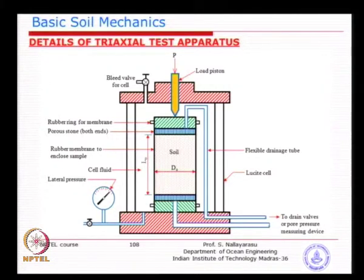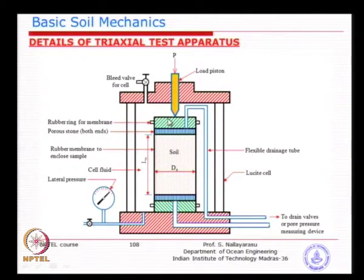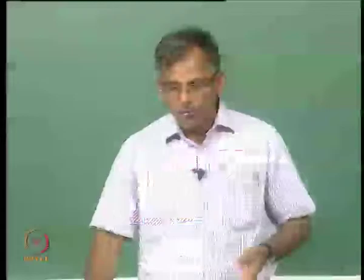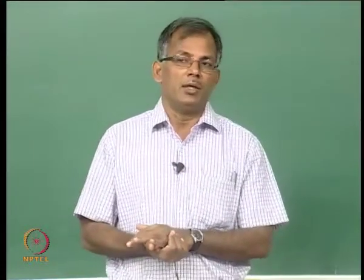The next test is the triaxial test. This test can only be performed if you have an undisturbed sample brought to the laboratory. The sample is placed inside a thin rubber membrane to keep it in the same condition until tested. It is placed inside a cell which can be pressurized externally. It has bottom and top porous stones so that during compression testing, pore water pressure can be relieved from either end. You have the option of whether you want to do a drained or undrained test, depending on the situation.